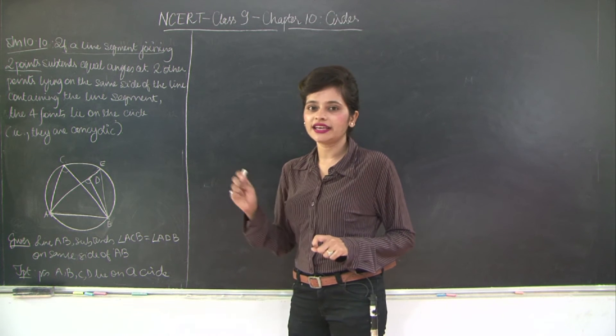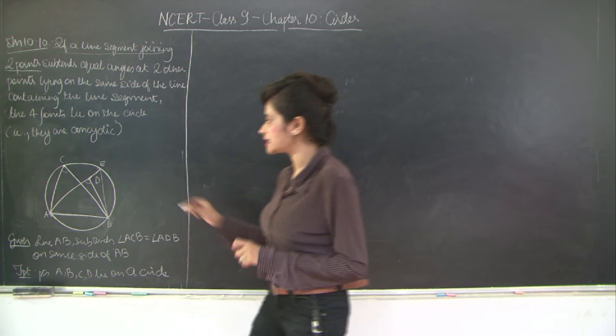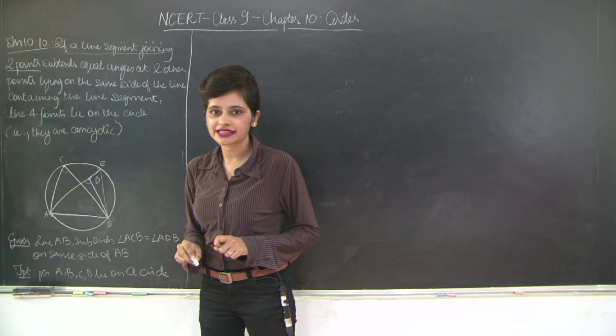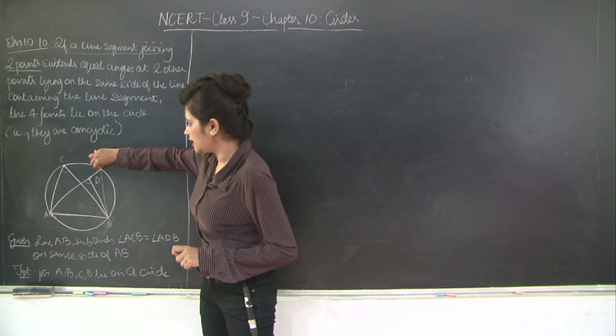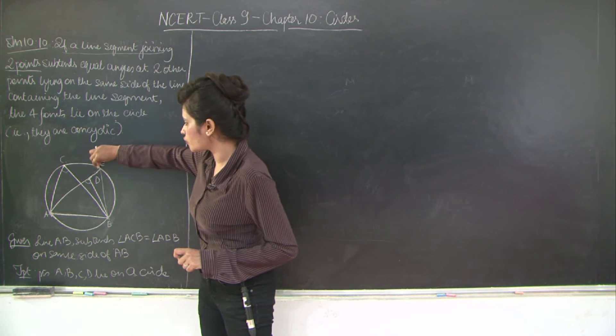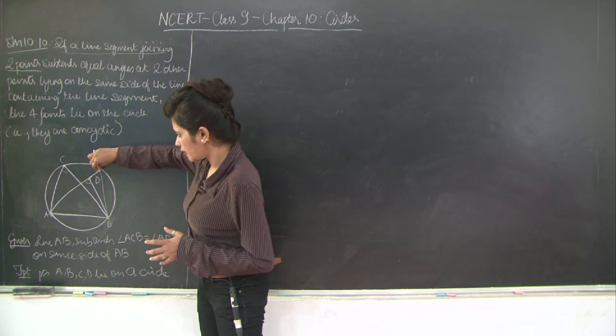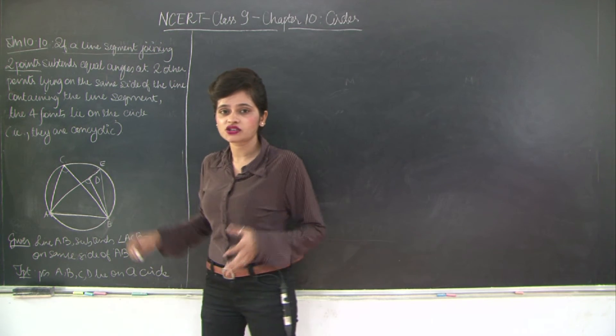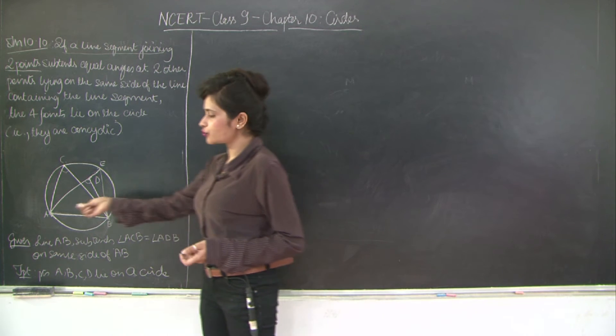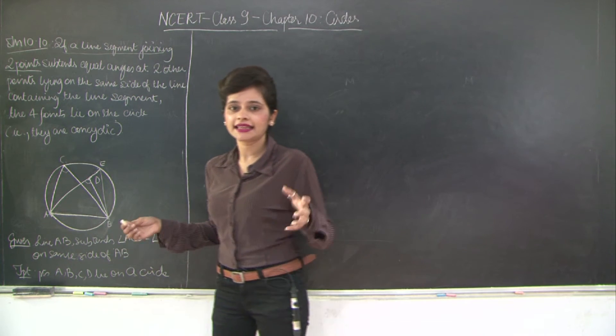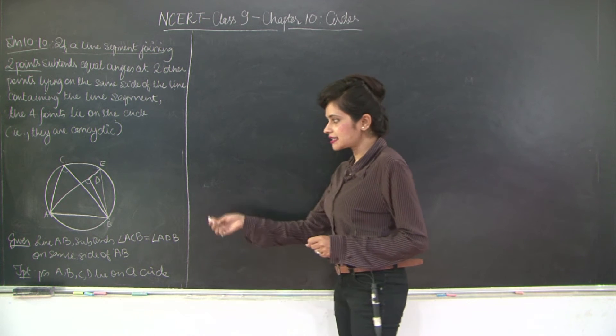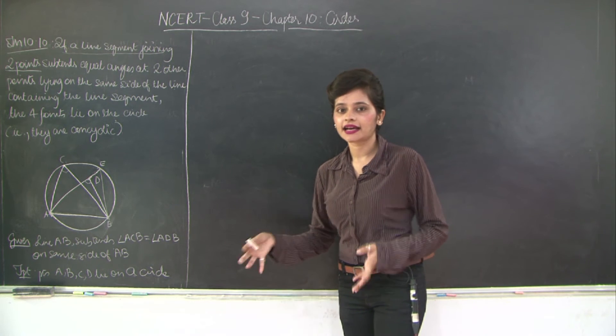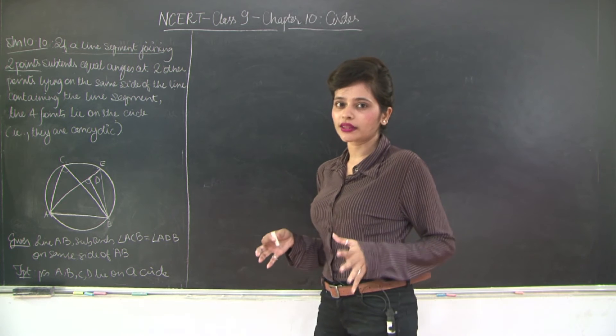That means A, E, B is equal to A, D, B which is not possible until and unless D and E coincide. Therefore, since E is coinciding with D and E lies on the, E is a point on the circle. Therefore, D is also a point on the circle and through construction, we already have that A, C and B, they lie on the circle. Hence, these four points are concyclic. Now let's go ahead and write the proof along with the construction.